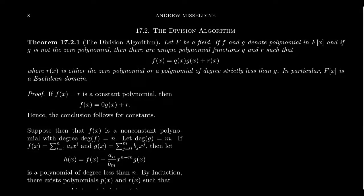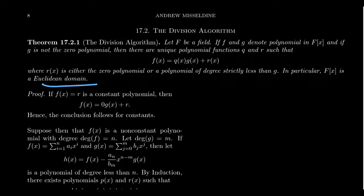A Euclidean domain is an integral domain which has a Euclidean norm. That Euclidean norm allows you to have a division algorithm such that given any two elements, there exists a unique quotient and remainder, where that remainder has some minimality condition attached to it. Euclidean domains are very important types of integral domains.